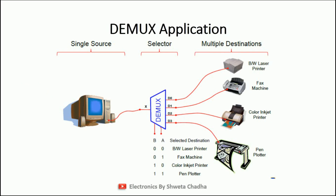For applications, here we have taken an example of a 1×4 demultiplexer. There is a single input signal — a computer. Depending upon the select lines 00, 01, 10, 11, the output is divided into 4 options: D0, D1, D2, D3. When select lines are 00, output goes to the laser printer; 01 to the fax machine; 10 to the colored inkjet printer; and 11 to the pen plotter. This is how demultiplexer applications work.